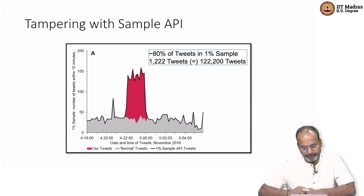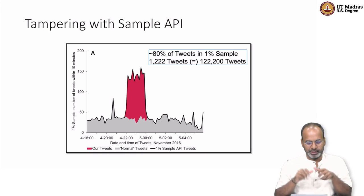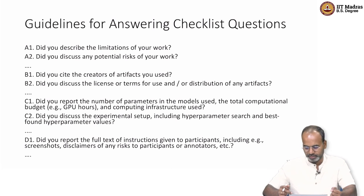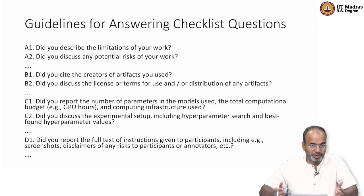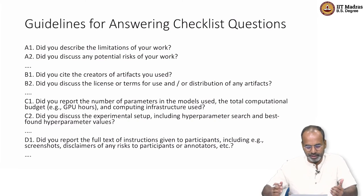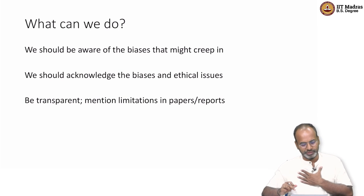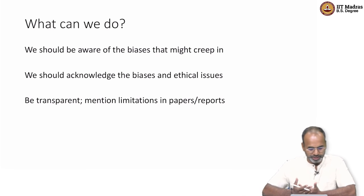Data processing bias and tampering with sampling itself — one study showed that the majority of tweets they were sending was actually part of the 1% random sampling tweets that Twitter was giving back. A list of recommendations was given: describe the limitations of your work, discuss potential risk to the user, report the full text of instructions given to participants. As researchers, we should be aware of biases and ethical problems in the data we collect.